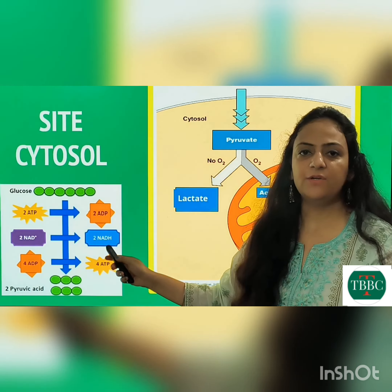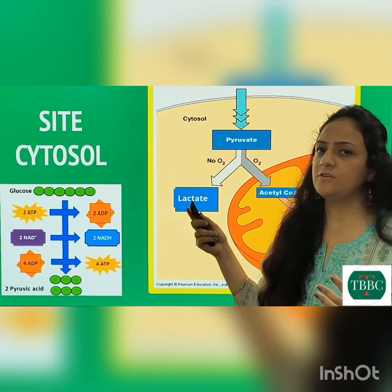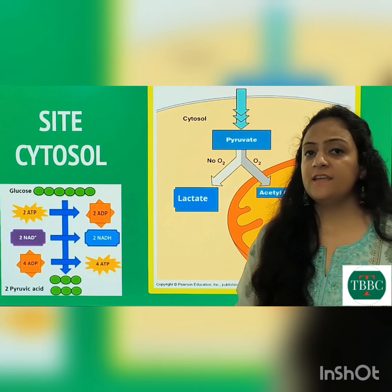In glycolysis, 2 ATPs are used and 4 ATPs are formed, and 2 NADH is formed. The site of glycolysis is the cytosol, and it occurs in all cells and all tissues of the organism — occurring in almost all animal cells.